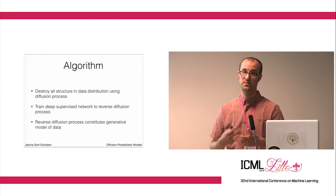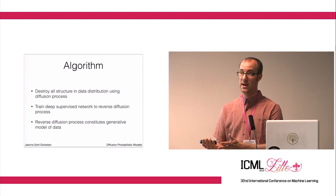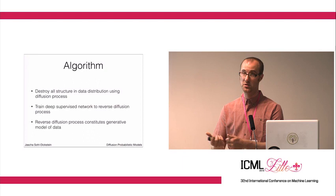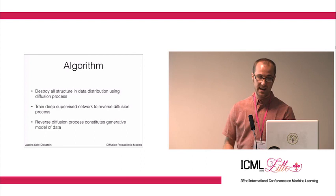This is going to turn out to be easy because the diffusion process has the same functional form forwards and backwards in time. If we do Gaussian diffusion forwards, then all we have to have this deep supervised network learn is a function which predicts the mean and covariance of each step in the reverse diffusion process. And that'll give us a generative model of the data.